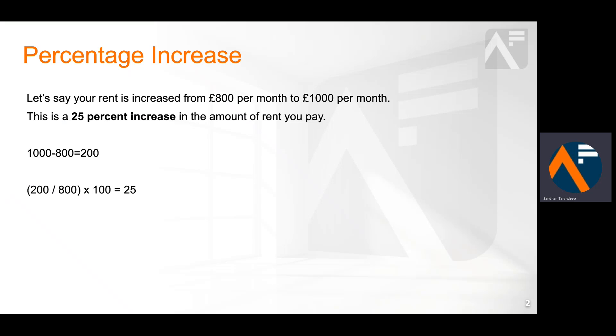It is calculated by taking the difference — £200 — and dividing it by the original amount of rent. To get the percentage, you multiply by 100, which gives you 25%.